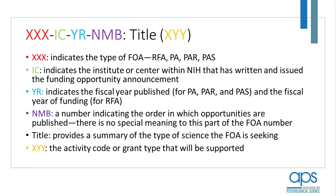The IC code indicates the institute or center within NIH that has written and issued this funding opportunity announcement. That institute or center is obviously participating, but there may be other institutes or centers also participating, which I will go over later. The year indicates the fiscal year the FOA was published in the case of a PA, PAR, or PAS, and the fiscal year of funding in the case of an RFA — this is important because it helps you determine the timing of when you may receive an award.